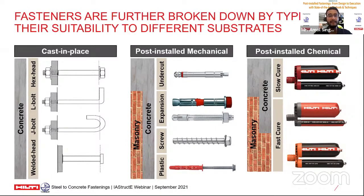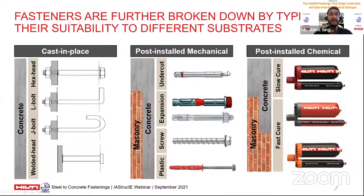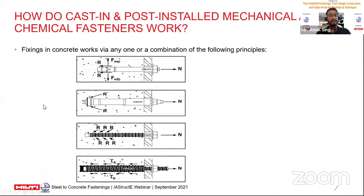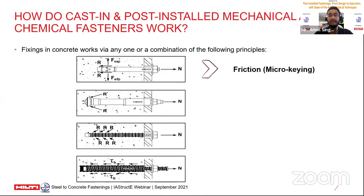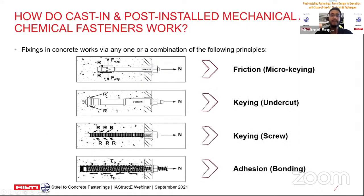To select the most suitable fastener, we must understand how they work. Despite many differences in quality, performance, and application coverage, all anchor technologies share a common ground — the way these systems transfer load onto the substrate is via one or a combination of three working mechanisms: friction, keying, and adhesion. With friction, a tensile load is applied on the fastener and transferred into the base material by friction — this is what expansion fasteners do, where you generate an expansion force by applying torque.